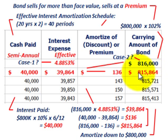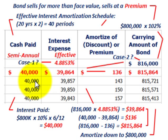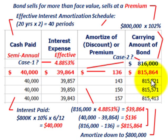For the next period, you just take the new carrying amount and multiply it by the effective interest rate to get the interest expense, then subtract that from the cash payment to get the new amortization amount, and subtract that from the carrying value to get the new carrying value for the following period.